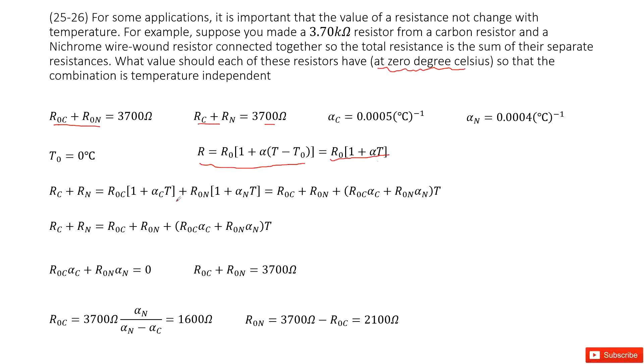Now we can write down the final resistance for carbon and nickel. So final RC is R0C times [1 plus alpha C times T]. And the final R0N is R0N times [1 plus alpha N times T]. Just input this equation inside for RC and RN.